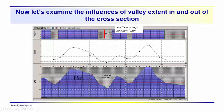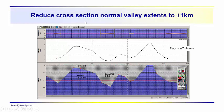How is that going to change the calculations that you just made for the infinitely long valleys? So that's kind of the question. We really aren't done yet, we've got to keep going. So we're going to reduce the cross-section normal valley extent to plus or minus 1 kilometer.